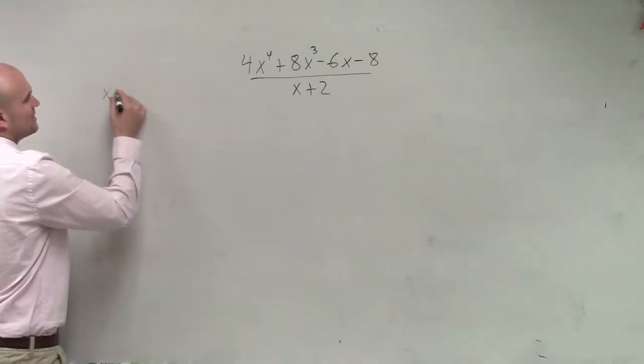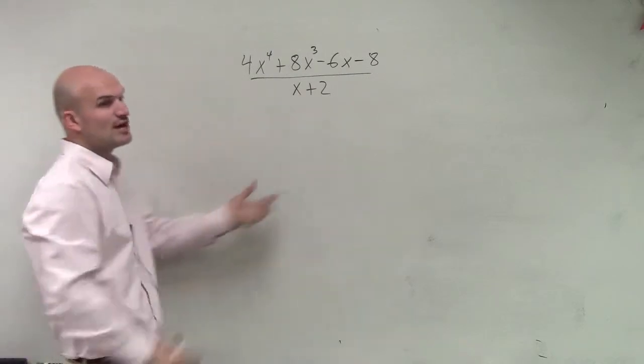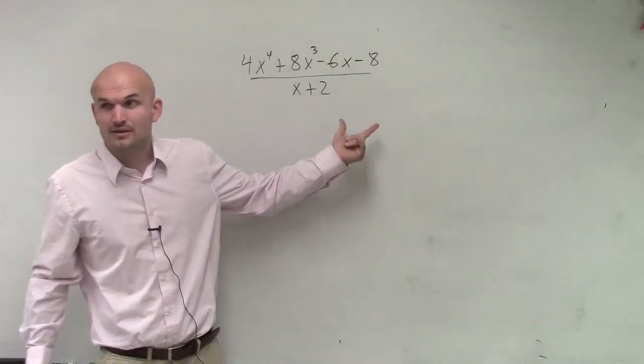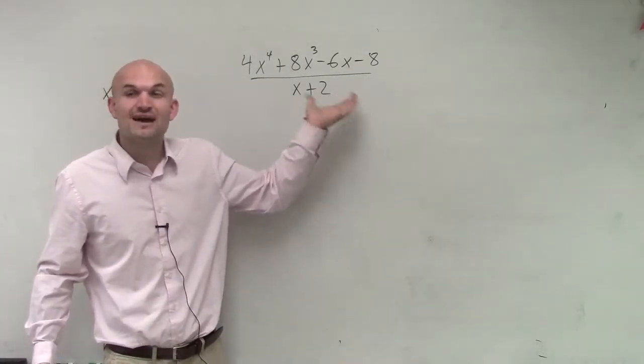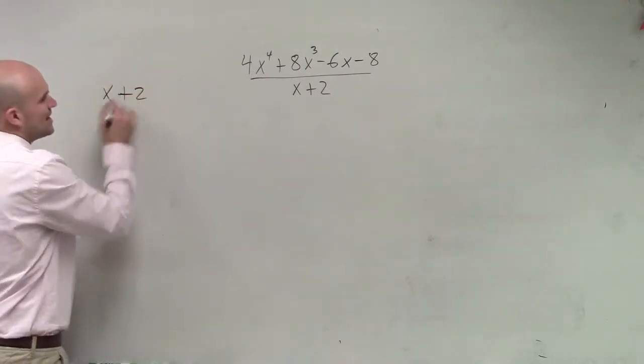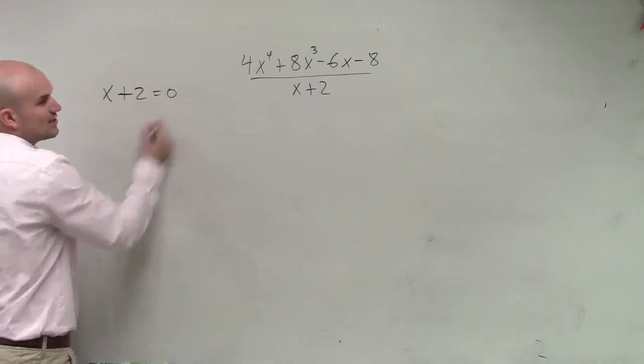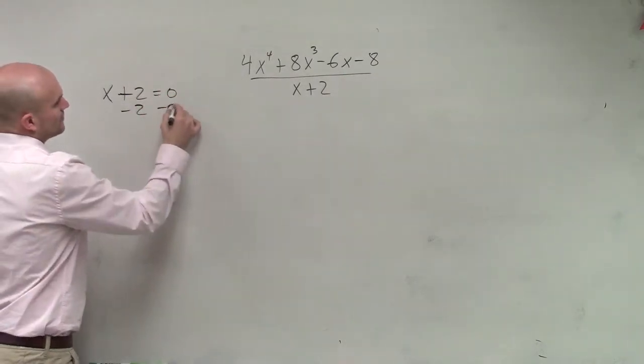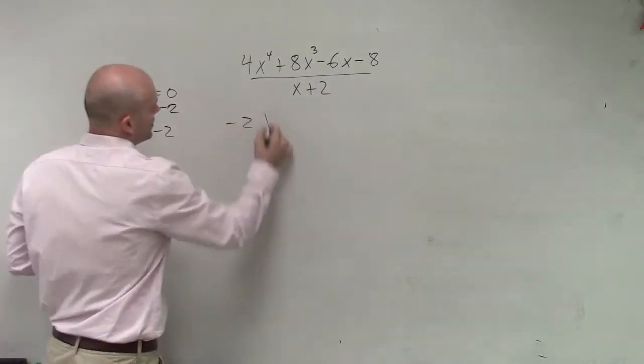The first thing we'll remember, guys, is we've got to make sure we take our divisor. And we're trying to prove this is a factor or not, right? We want to see, does this divide into it? If it divides into it, that means it's a factor. So we're going to write our factor, or our possible factor, as a zero. So I set it equal to zero and solve. x equals negative 2. So I go negative 2.